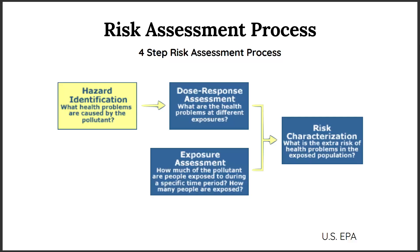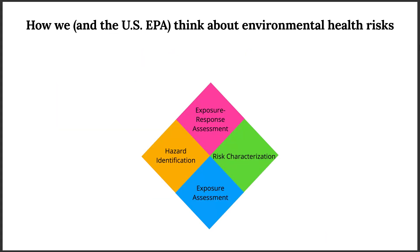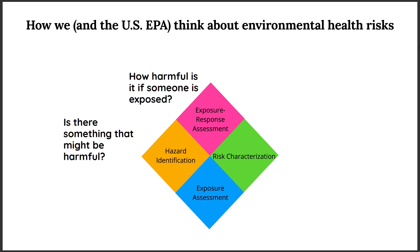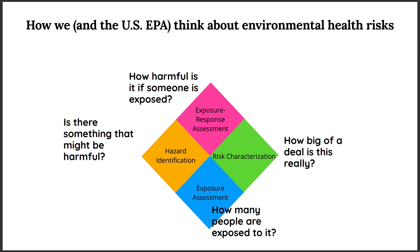And then in the end we have a fourth step called risk characterization, which basically just asks: how big of a deal is this anyway? So, as a simple version: is there something that might be harmful? How harmful is it if you're exposed? How many people are exposed to it? And how big of a deal is this, really? Four basic questions.